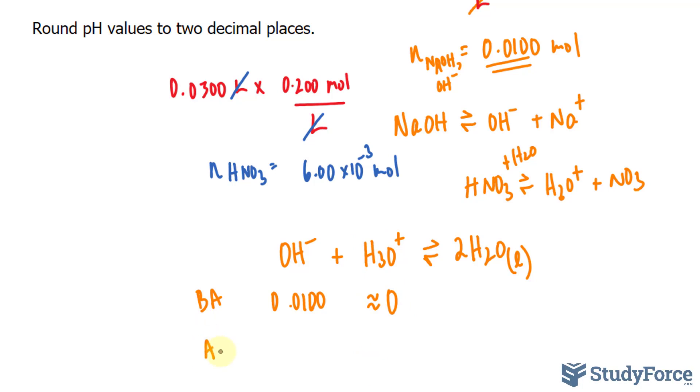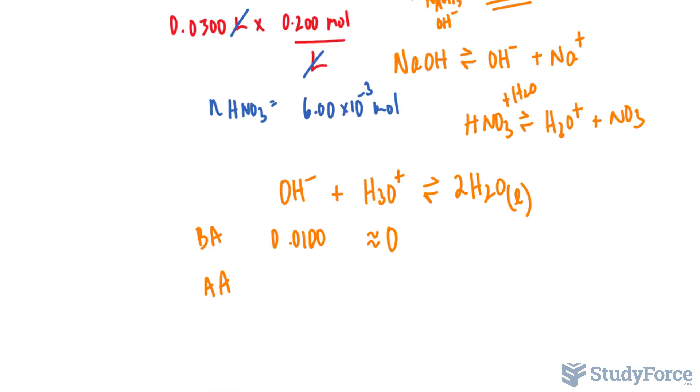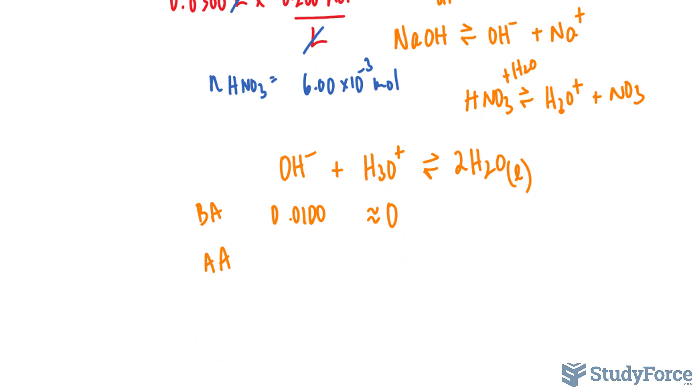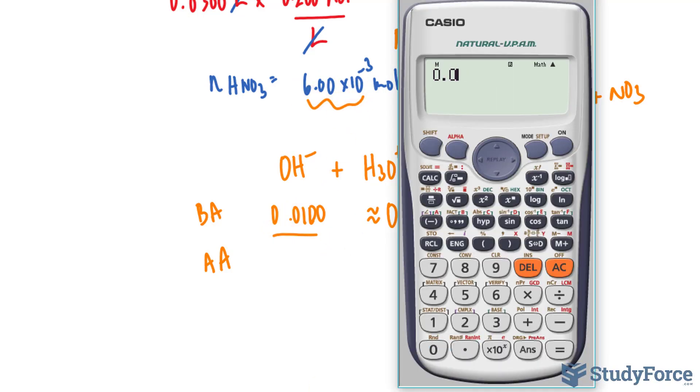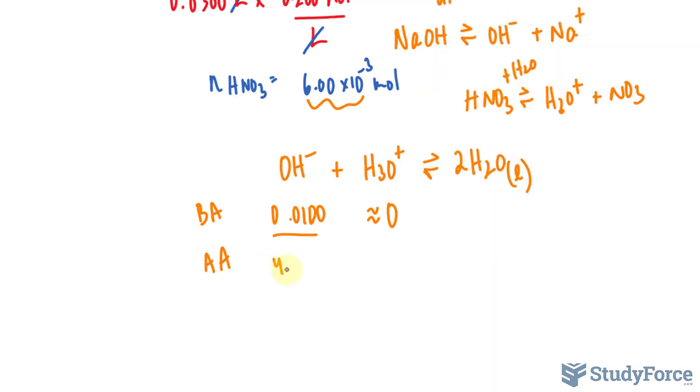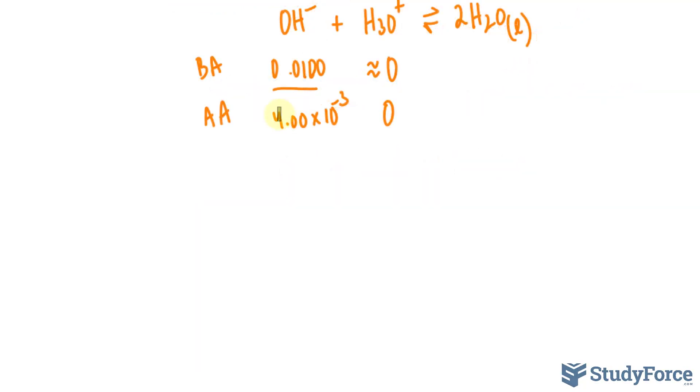And after the addition, the amount of H3O plus will neutralize the OH minus. So I'll subtract this amount from this. Let's do that: 0.0100 minus the answer before. And now we have 4.00 times 10 to the power of negative 3 OH minus, and no more H3O plus remaining. So I'll write down zero.